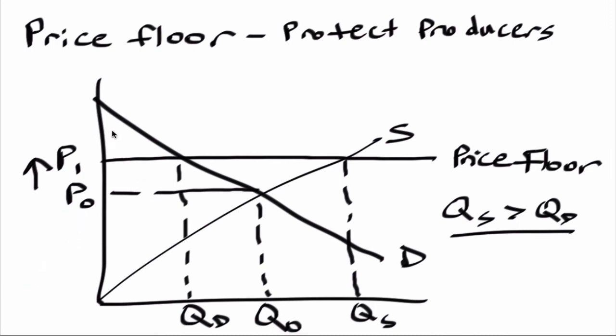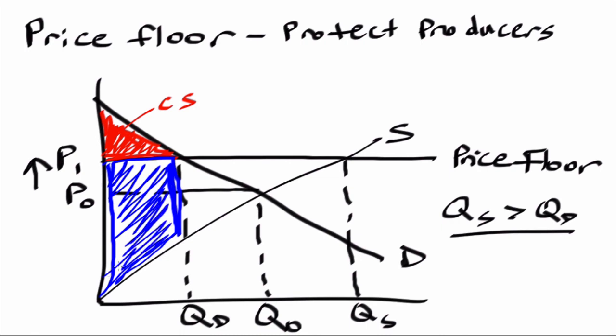The consumer surplus originally was this right triangle. However, now it's shifted to this region - this is how much extra benefit they get at the new price. We know this is a producer protection action, so the producer surplus is this entire region that they benefit from due to the price floor. And finally, we have a deadweight loss - this region that nobody gets as a result of this price floor.